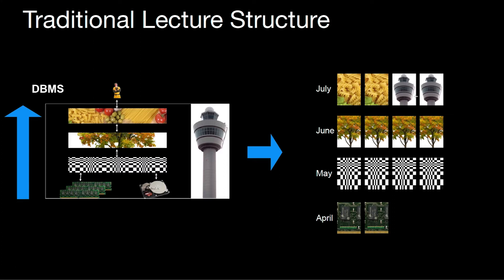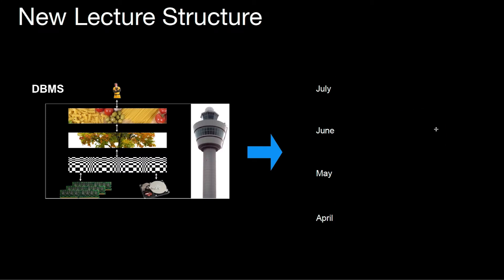The problem with this structure is that usually when you see the material for the first time, you get lost pretty easily. If you have four weeks of data layouts, maybe that's not so cool. And if you have four weeks of indexing with 50 different index structures, maybe you get a little lost. So what we do in this lecture is something like this.